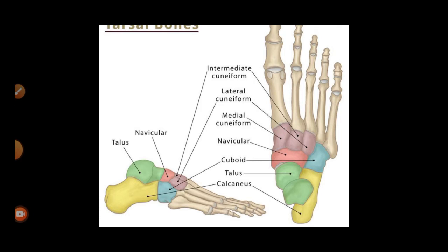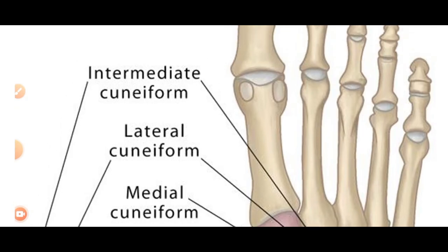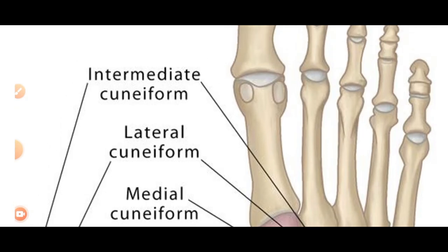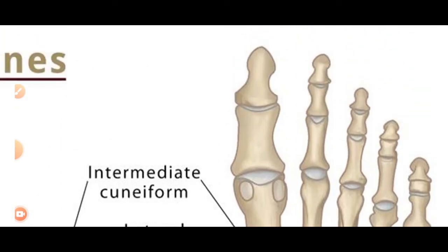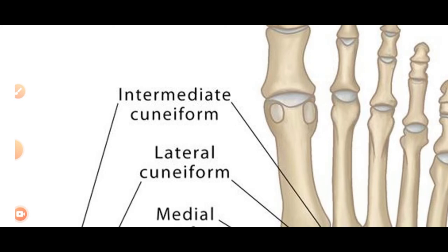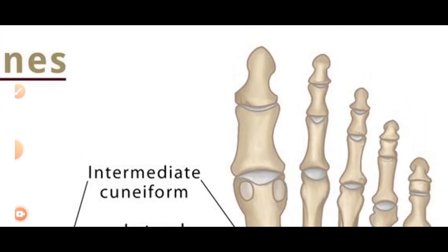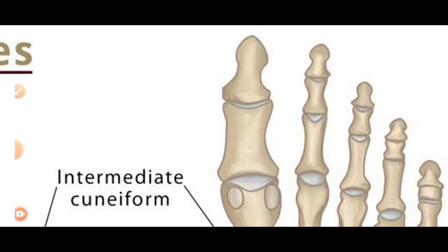A separate video will be shared about the tarsals in detail. The tarsals are 7 in number: calcaneus, which forms the heel portion; talus; cuboid; navicular; and three cuneiforms — intermediate, lateral, and medial. Then the metatarsals, and finally the phalanges.